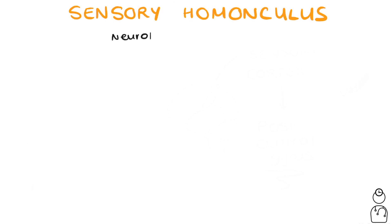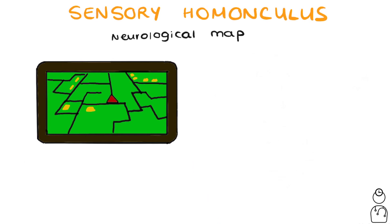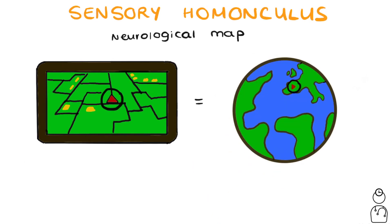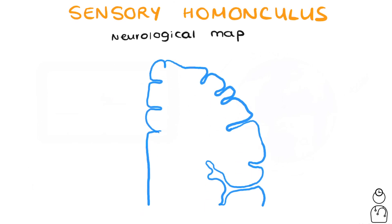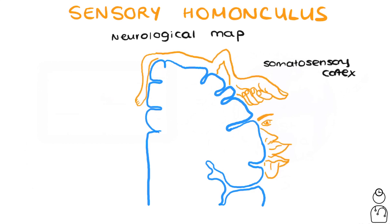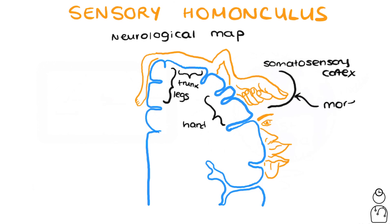The concept of the sensory homunculus is really important to grasp. It's the idea that there's a neurological map in your brain. For example, if you have a GPS, a point on the GPS corresponds to an actual real-life point on Earth. The same way, a single point on your finger actually corresponds to a particular part of your brain in the somatosensory cortex. Roughly speaking, one bit corresponds to the legs, another to the trunk, and another to the hand. The hand takes up a larger part of the cortex because there are more sensory receptors in your hand than in your legs, and therefore more nerves make up points in the somatosensory cortex for the hands than the legs.